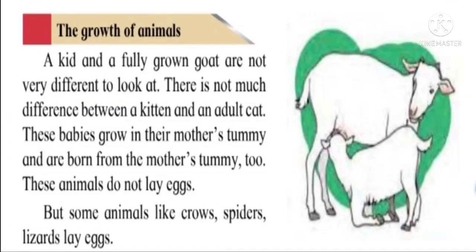You can see a beautiful goat with its baby, that is a kid. These goats and their young ones look similar. There is not much difference between a cat and a kitten, or a dog and a puppy. These animals grow in the mother's tummy and are born from their mother's tummy. These animals do not lay eggs.